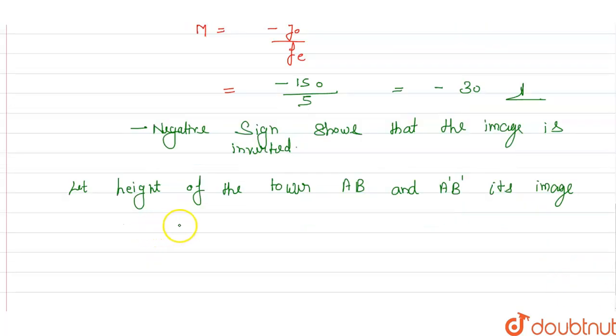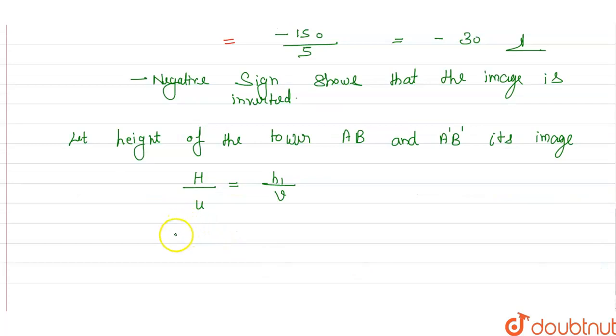Then the formula will be H upon u equals h1 upon v. From here, the height of image formed by the objective h1 will be H upon u times v.